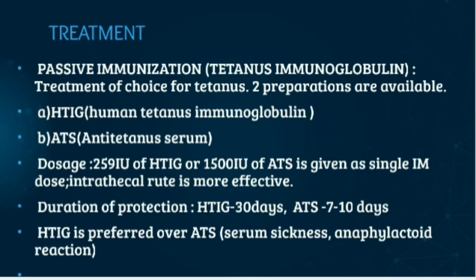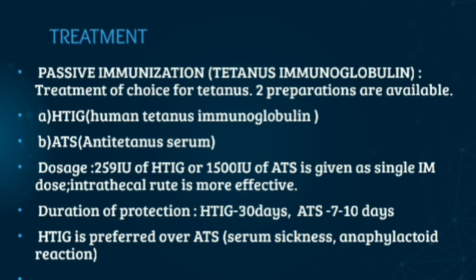Passive immunization with tetanus immunoglobulin is the treatment of choice for tetanus, whereas antibiotics have a minor role. Two preparations are available: first, HTIG (human tetanus immunoglobulin) at a dosage of 250 international units; second, ATS (anti-tetanus serum) at a dosage of 1500 international units. Both are given as a single intramuscular dose, but the intrathecal route is more effective. Duration of protection of HTIG lasts 30 days and of ATS lasts 7 to 10 days. HTIG is preferred because ATS is associated with side effects such as serum sickness and anaphylactoid reaction.